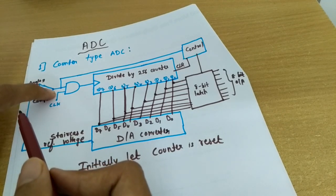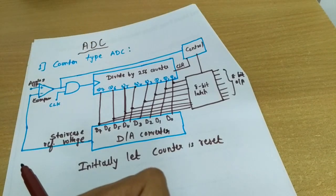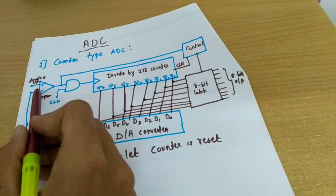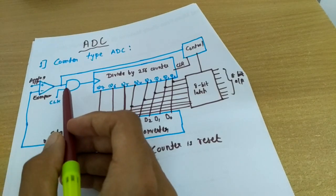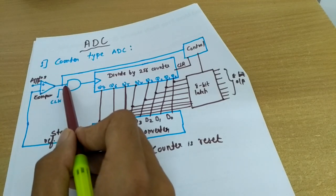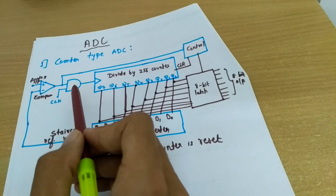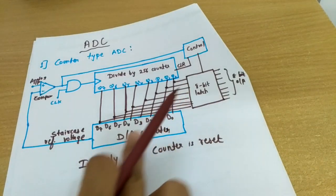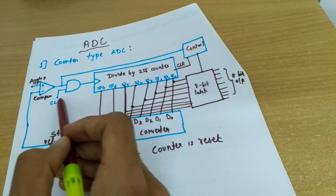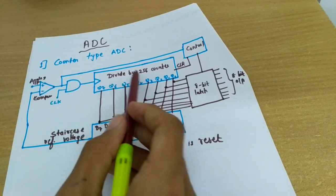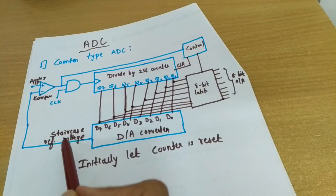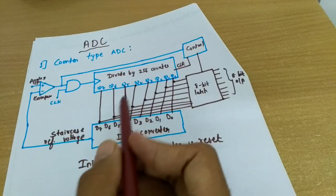Depending on whether the comparator output is high or low, the AND gate is enabled or disabled, and the counter operates accordingly. Whenever the analog input is greater than the DAC output, a high signal is produced; otherwise a low signal. The comparator output serves as an active-low end-of-conversion signal. Since the counter is initially reset and the output is zero, the comparator gives logic 1, the AND gate is enabled, the clock passes through to the counter, and the counter advances through its binary states.